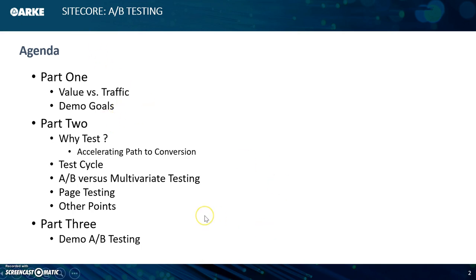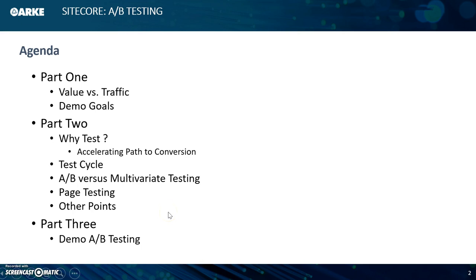In part two of this video, we will actually go through the why of testing, the testing cycle, AB versus multivariate testing, page testing and other points where testing is concerned. And then in part three, I'll actually go through a demo involving an A-B test, including how to set up an A-B test. We'll look at an existing one to see how we can examine the results of that test, which may lead to how we're going to update the site based on the feedback we're getting.